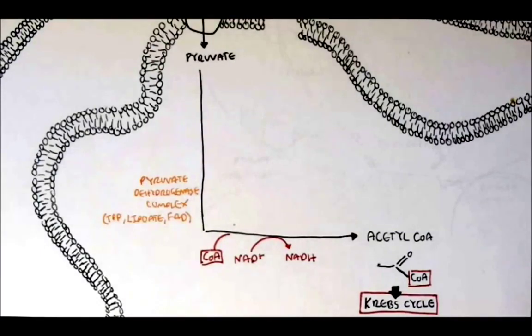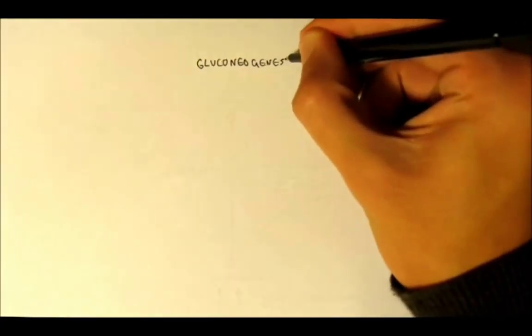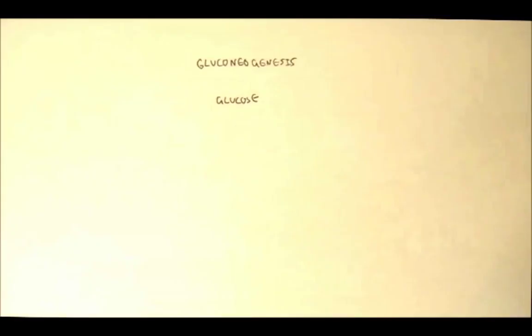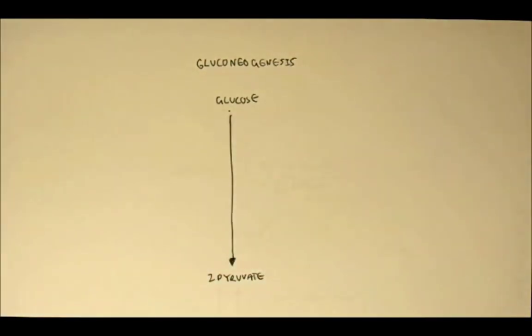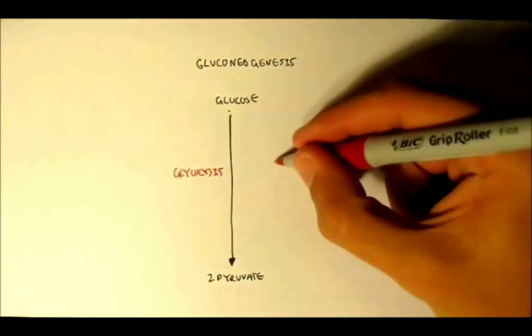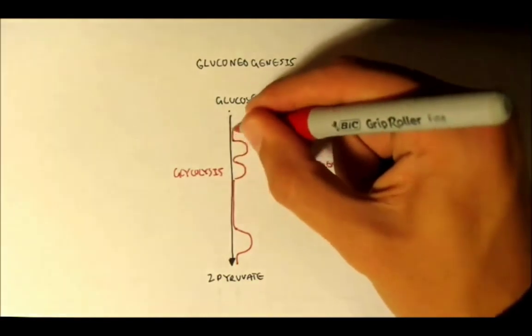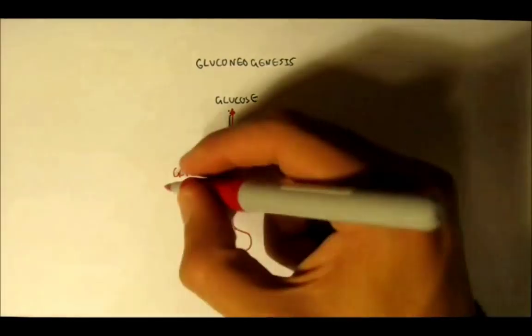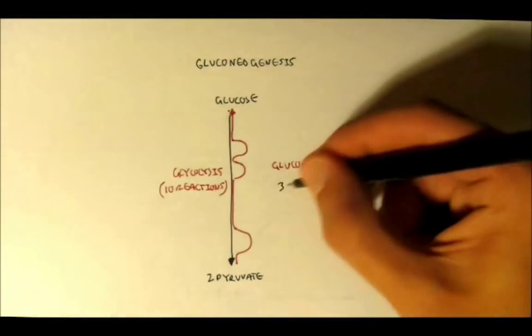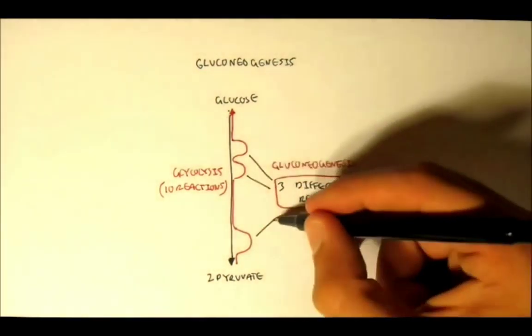This video is carrying on from the metabolism of glycolysis. It's talking about gluconeogenesis, which is essentially making new glucose from amino acids, fats, acetyl-CoA, but in this case we're concentrating on pyruvate. As we learned in glycolysis, glucose yields two pyruvate molecules. Glycolysis is a 10 reaction process. Gluconeogenesis means making new glucose and it's the reverse of glycolysis, but with three differences because if you remember, some reactions in glycolysis are irreversible. There are actually three reactions.